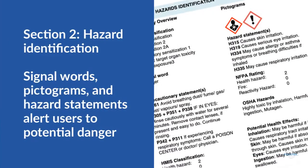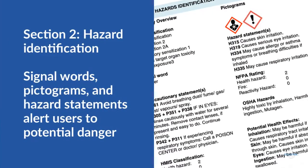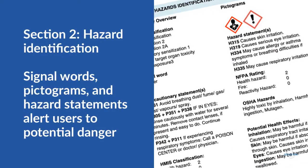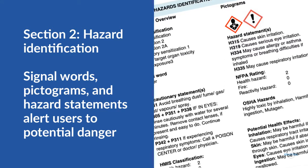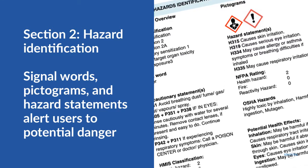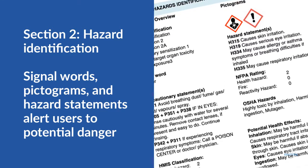There is important information in Section 2. This part highlights all hazards regarding the chemical, including signal words, pictograms, and hazard statements.